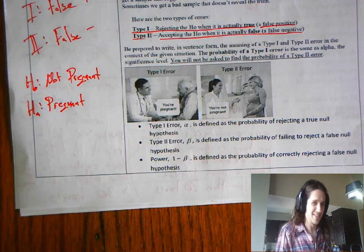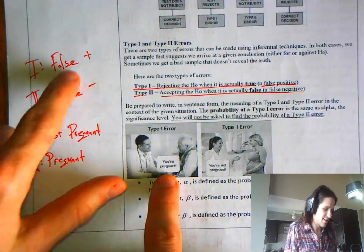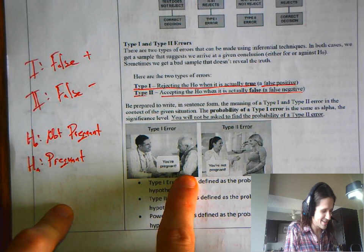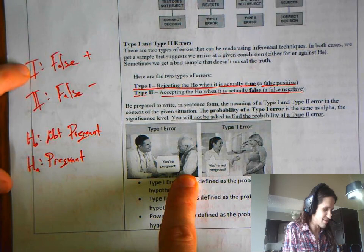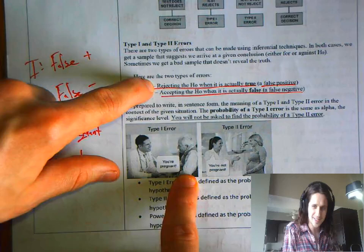So our type 1 error. Rejecting the null when it's actually true. This man is not pregnant. How do I know? He's an old man. That's how I know. So, he is not pregnant. But to say that he was pregnant, that's a false positive. That's rejecting the null when it's actually true, a false positive. He's not pregnant. He's an old man.